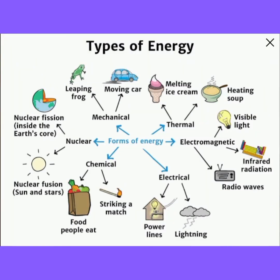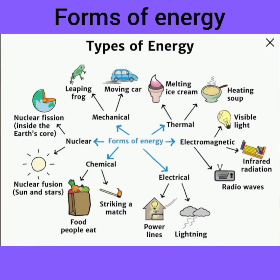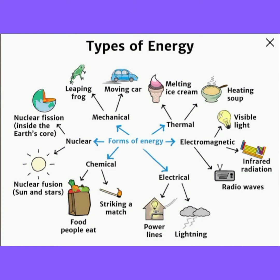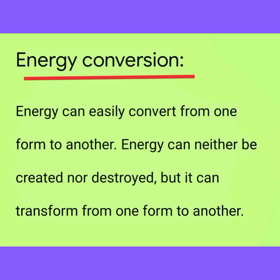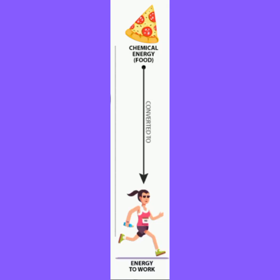What are the different forms of energy? Energy exists in many forms such as mechanical energy, chemical energy, light energy, sound energy, heat energy, electrical energy, and magnetic energy. Energy can easily convert from one form to another — it can neither be created nor destroyed, but it can transform from one form to another. Let us see some examples of energy conversion.